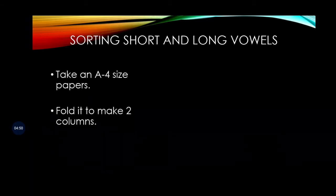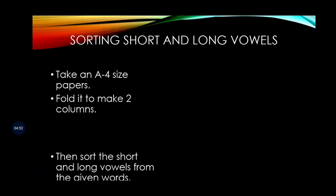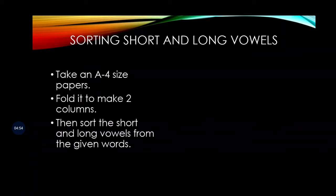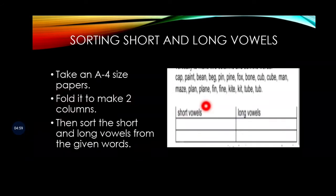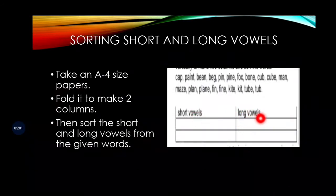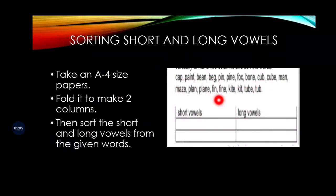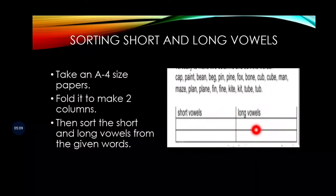Take an A4 size paper, fold it to make two columns, and then sort the short and long vowel sounds which are given over here. You will make the two columns like this by folding the A4 size paper, and then you have to sort out the long and short vowel sounds in these two columns.